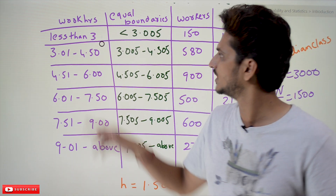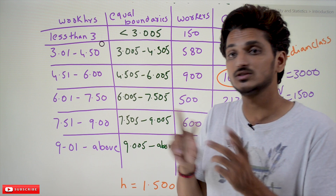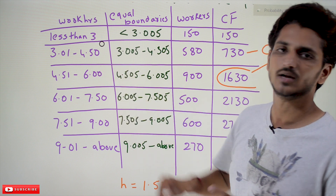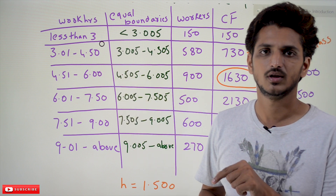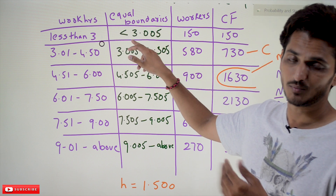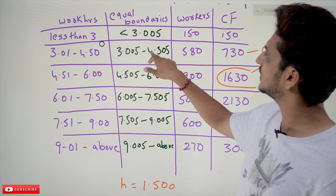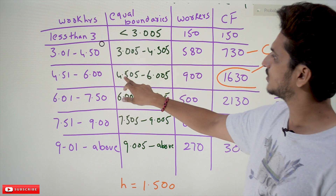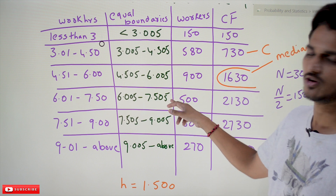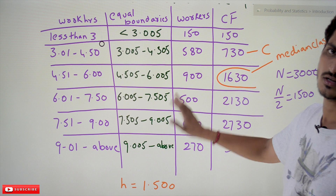To make it continuous, take the average of 3 and 3.01, which gives 0.005. So you adjust the boundaries by that amount — this gives equal boundaries. The adjusted class intervals become: up to 3.005, then 3.005 to 4.505, then 4.505 to 6.005, then 6.005 to 7.505. You have to equate the boundaries this way, then solve it.